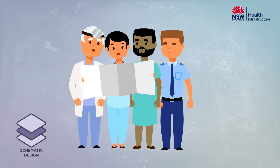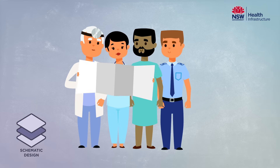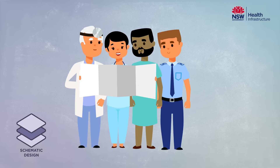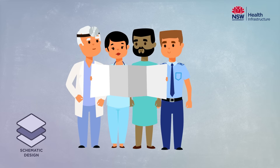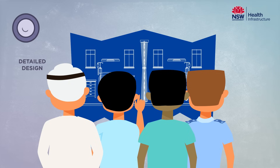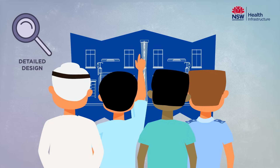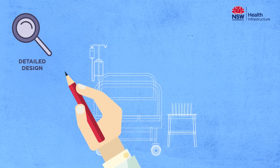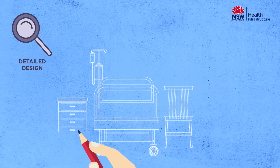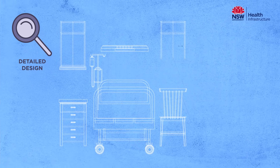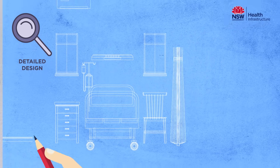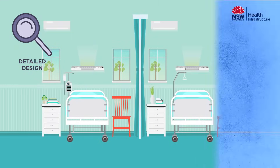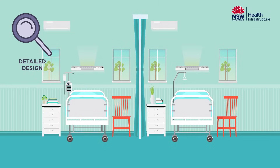Once schematic design is complete and reviewed by the project user groups, the redevelopment moves into the detailed design phase. During detailed design, the user groups look at the layout of every room and hospital space, such as the location of furniture, fittings and room colours, as well as the external façade and outside spaces.